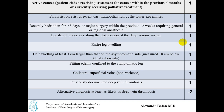Collateral superficial veins, non-varicose — one point. Previously documented deep vein thrombosis — one point. Alternative diagnosis at least as likely as deep vein thrombosis — minus two points. These are all the conditions, and depending on how many the patient has, we proceed to the scoring table.